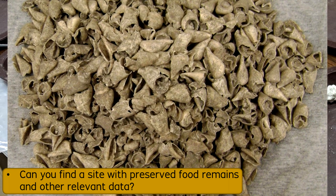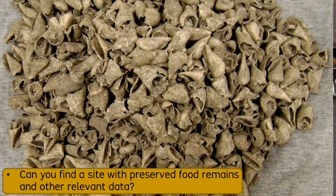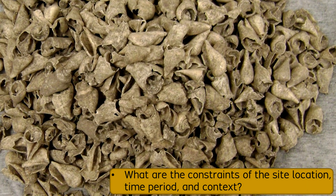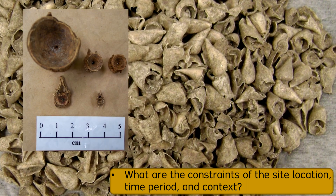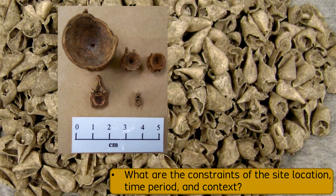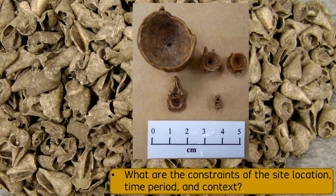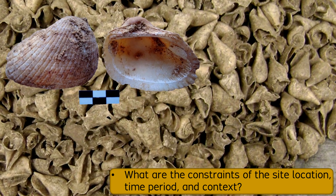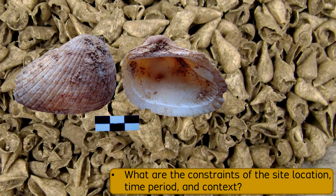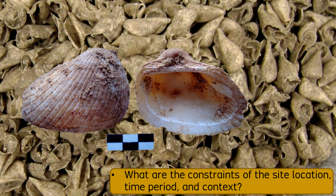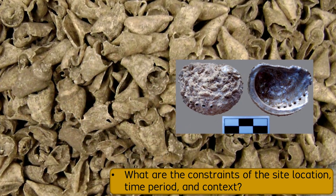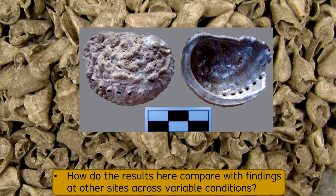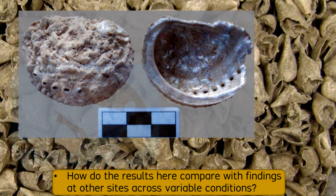Even after you can demonstrate the relevance of one site assemblage for your question about ancient food resources, you would still need to be aware of the constraints of your work within the parameters of a measured geographic area, time period, and cultural context. You can produce more powerful conclusions if you can compare your site-specific findings with the documentary evidence at other sites that, in total, can account for a broader range of variables.